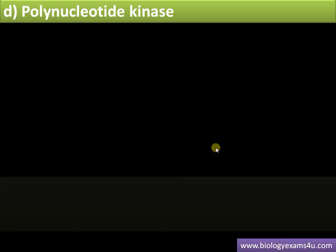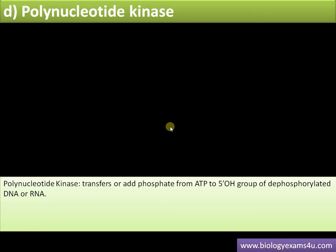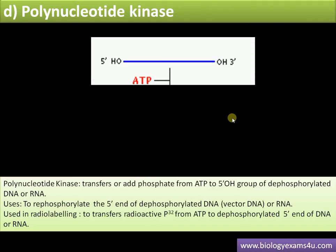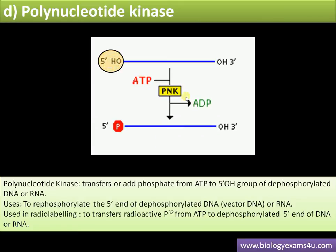The next enzyme is polynucleotide kinase, which acts opposite to alkaline phosphatase. It adds a phosphate group from ATP to the 5'-OH group of a dephosphorylated DNA or RNA strand. This is used for rephosphorylation and also in radio labeling. Polynucleotide kinase transfers the phosphate from ATP — releasing ADP — and adds it to the 5' end. In radio labeling, it transfers radioactive P32 from ATP to the dephosphorylated 5' end of DNA or RNA.